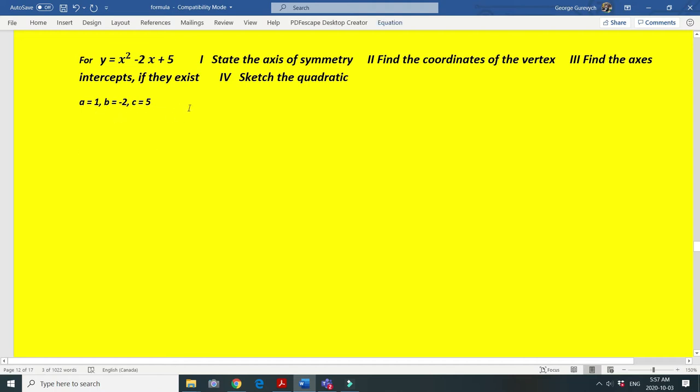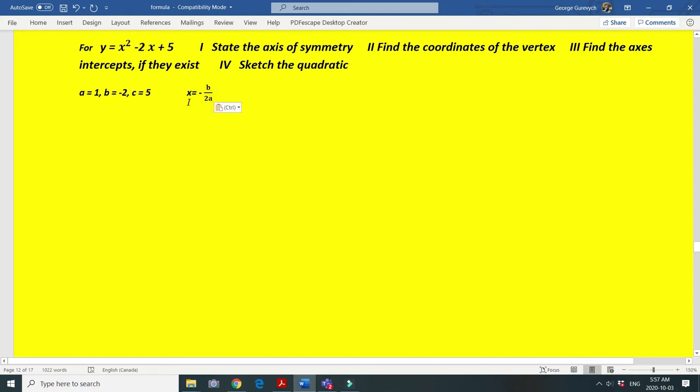The axis of symmetry is x equals minus b divided by 2a, which is 2 divided by 2, which is 1. So x equals 1 is our axis of symmetry.